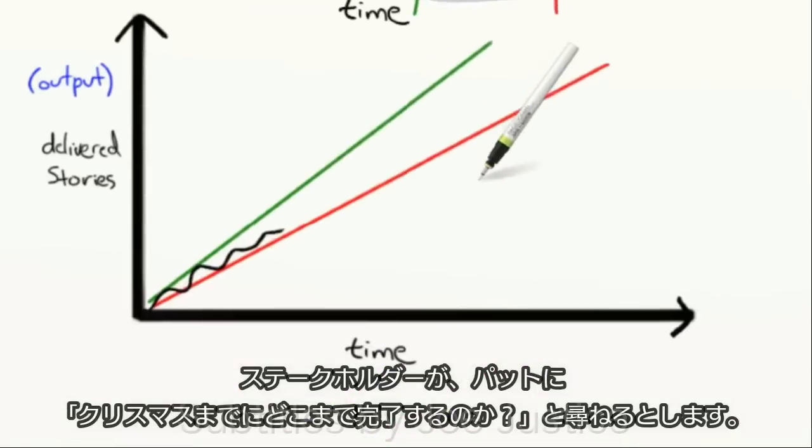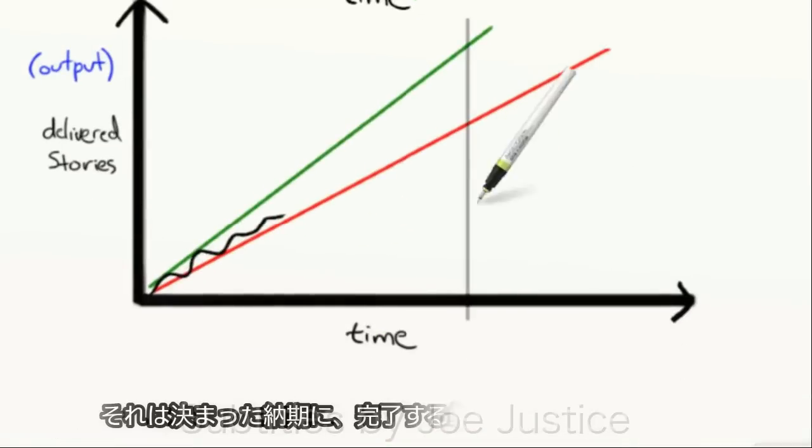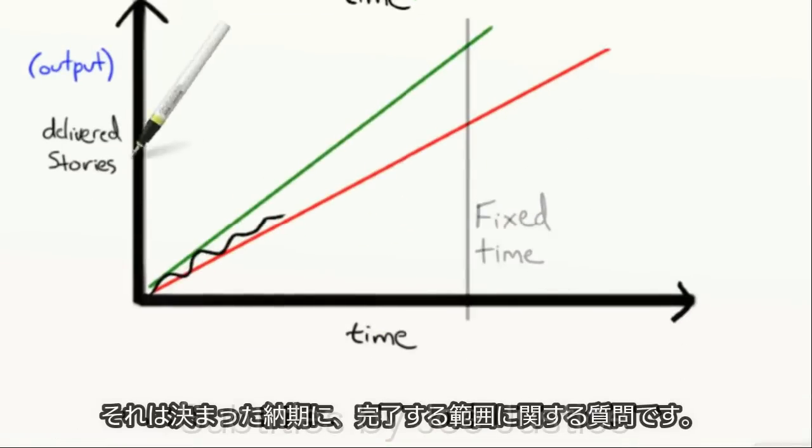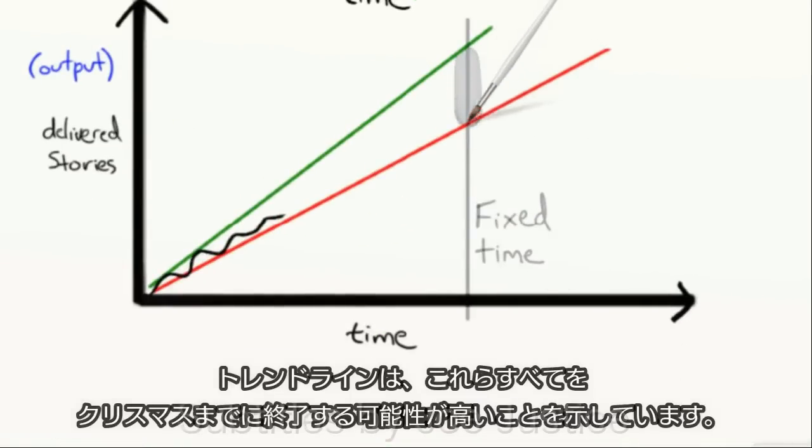Suppose the stakeholders ask Pat, how much will be done by Christmas? That's a fixed time, variable scope question. The trend lines tell us, I will most likely finish all of these by Christmas, some of those, and none of those.